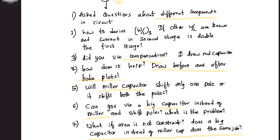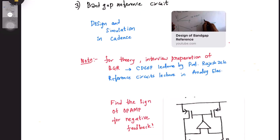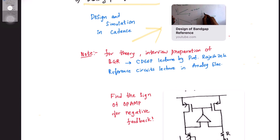The next analog project we are going to discuss is the bandgap reference circuit, also known as BGR. This playlist has videos on designing and simulating BGR in Cadence. For theory or interview preparation, you can refer to CDIP lectures by Professor Rajesh Zilay on Analog Electronics — specifically the reference circuits lectures where BGR is taught.